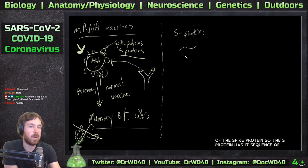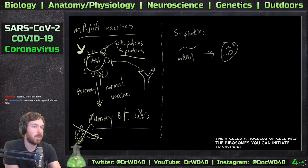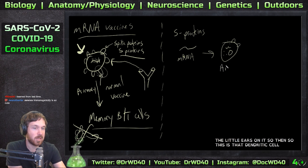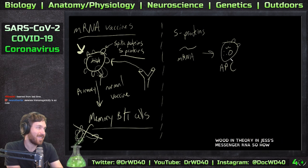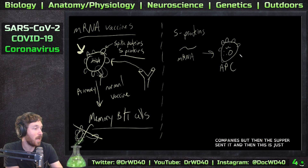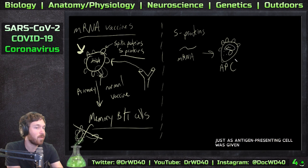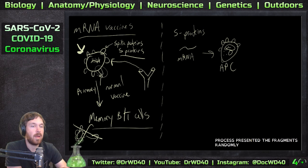We know the sequence of the spike protein — the S protein has its RNA sequence. You put this messenger RNA into a cell; the cell has ribosomes, you can initiate transcription, and you'll produce a cell that has the spike protein on it. This is the antigen presenting cell we talked about. In theory, the dendritic cell would ingest this messenger RNA and then present it — just like any antigen presenting cell.